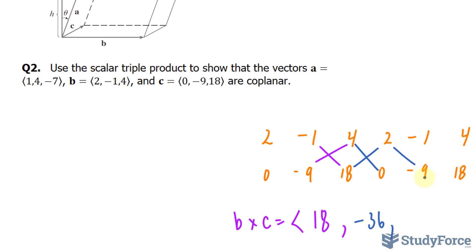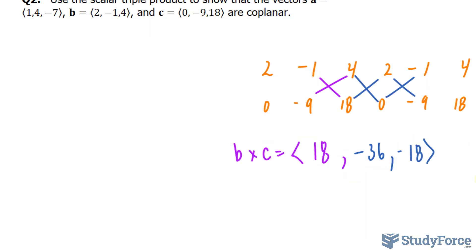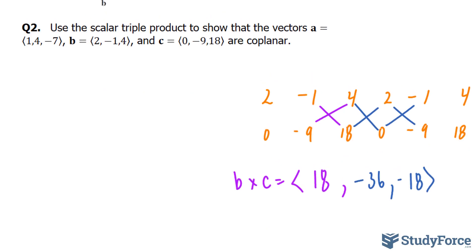2 times negative 9 is negative 18. Minus the product of these two, we end up with negative 18. We'll take this vector now and multiply it to a. Essentially we're finding the dot product of a and b times c.